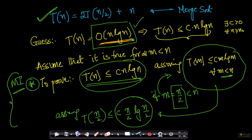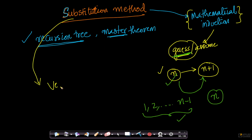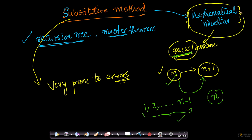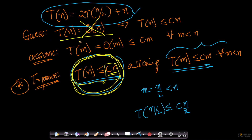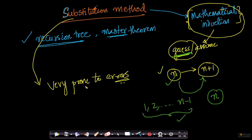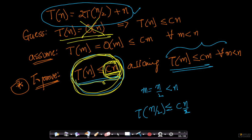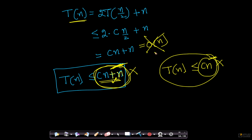One very important thing about the substitution method is that it is very prone to mistakes if you are not careful. While it is a simple idea — we all learned mathematical induction in high school — it is very easy to fall into pitfalls like this. Please ensure the RHS does not change. It has to be c·n exactly; it cannot be c·n + n. Many people make this mistake and incorrectly conclude T(n) is O(n). You have to be careful not to make these errors.